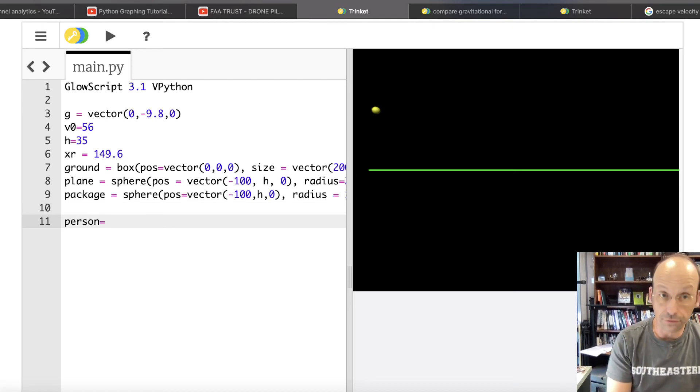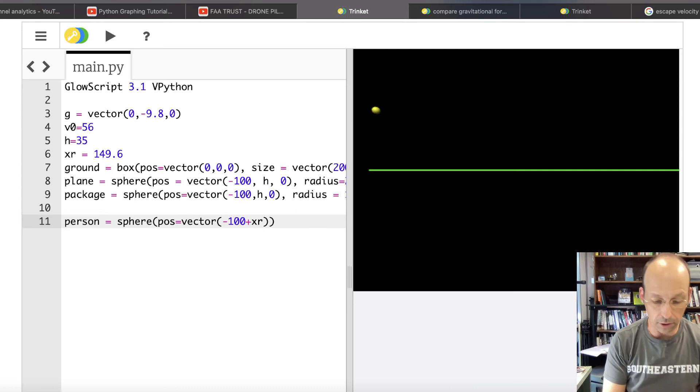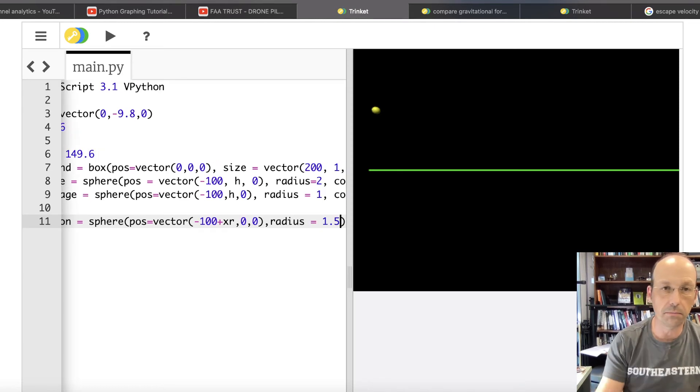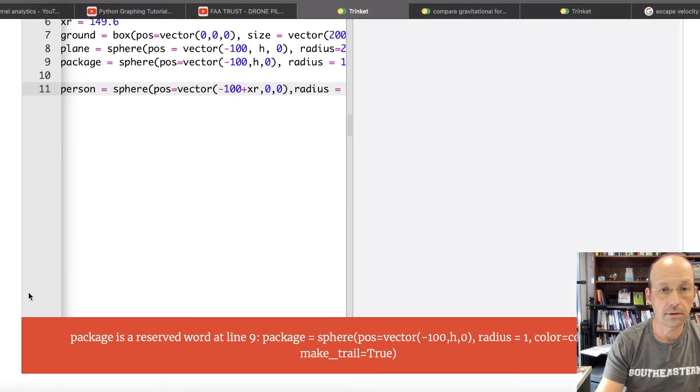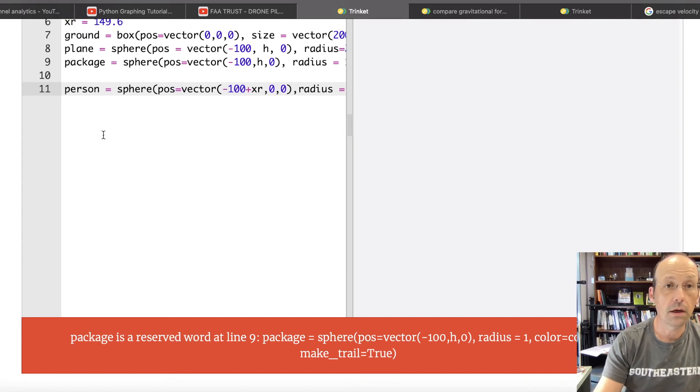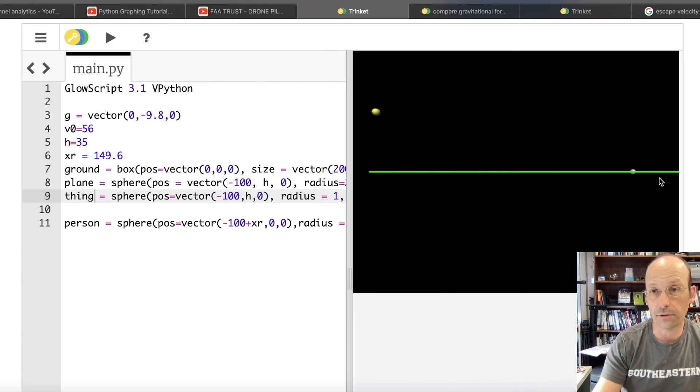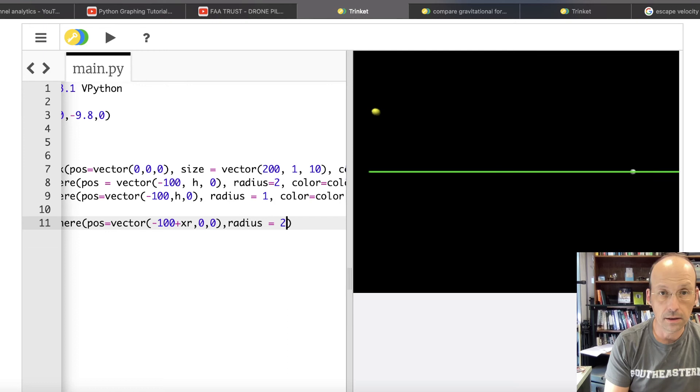And then finally, let's make the person is equal to a sphere. The position, they're going to be on the ground, which is partially underground because the ground is a meter thick. So that's like the distance from one, the middle of the box up is half a meter. But let's just put the position at vector. So it's going to be negative 100. Right? Because that's where the plane started. Plus XR. So that means I'm going to start where the plane is and move it ahead. XR. And then zero, zero. And for the radius, let's put the radius at 1.5. And let's just leave the color alone. And there's an error. Package is reserved word. Cool. Cool. Let's say thing. How about that? Is thing a reserved word? I don't think so. So there's my person down there. I'm going to make them a little bit bigger. Let's just make them the same size as the plane. And you'll see that they do extend through the thing. But that's fine. I don't really want to make a bust of the whole thing.